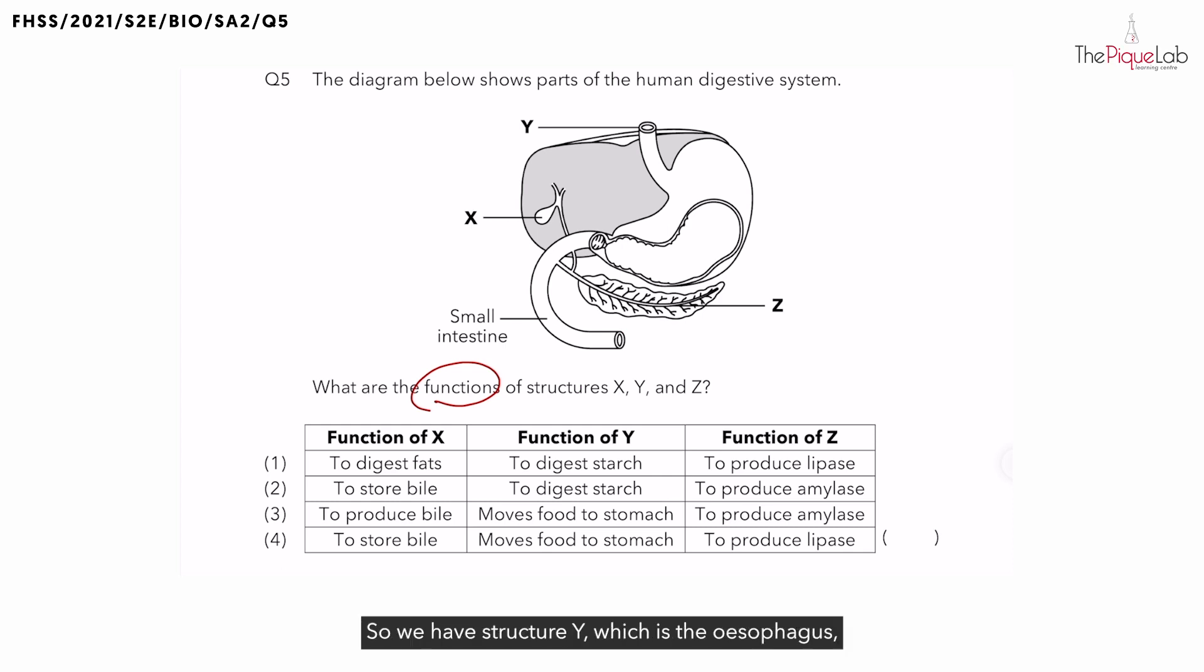So we have structure Y, which is the esophagus. Structure X is the gallbladder. And finally, what is structure Z? That leaf-shaped looking organ. That's the pancreas.